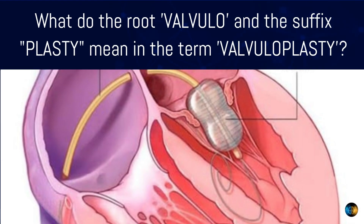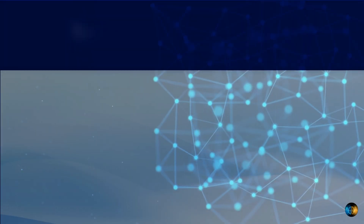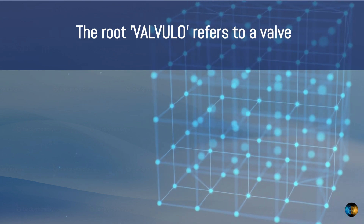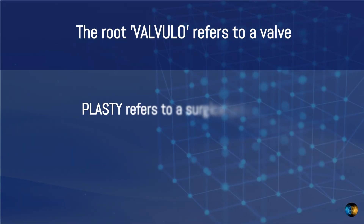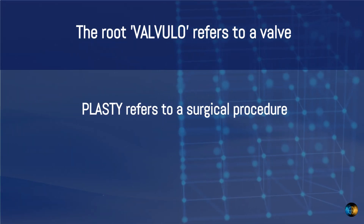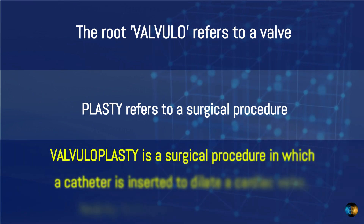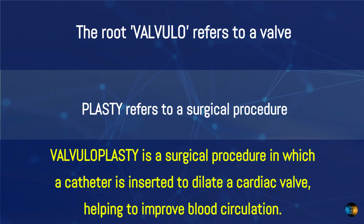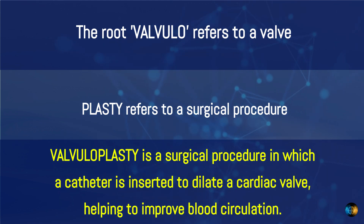What do the root valvulo and the suffix plasty mean in the term valvuloplasty? The root valvulo refers to a valve, and the suffix plasty refers to a surgical procedure. So, valvuloplasty is a surgical procedure in which a catheter is inserted to dilate a cardiac valve, helping to improve blood circulation.